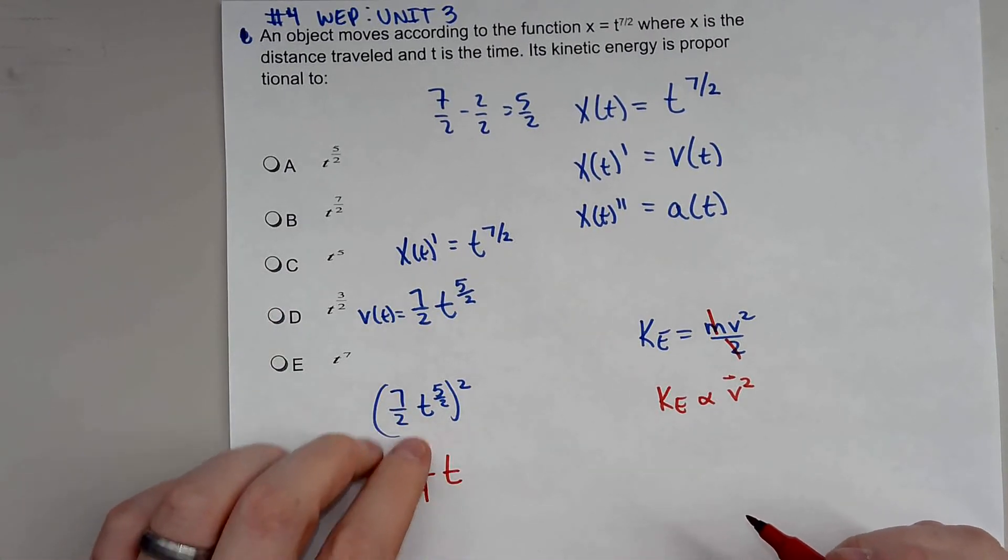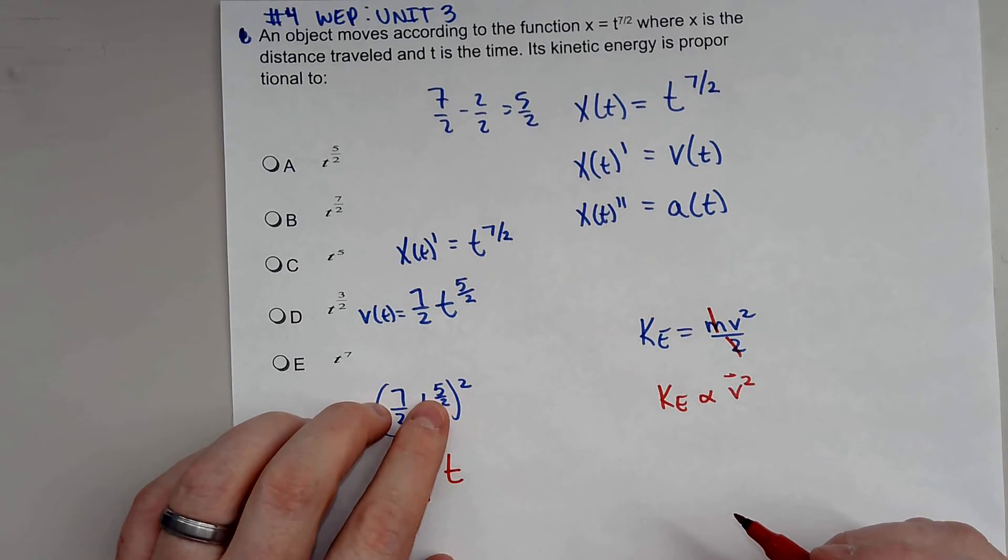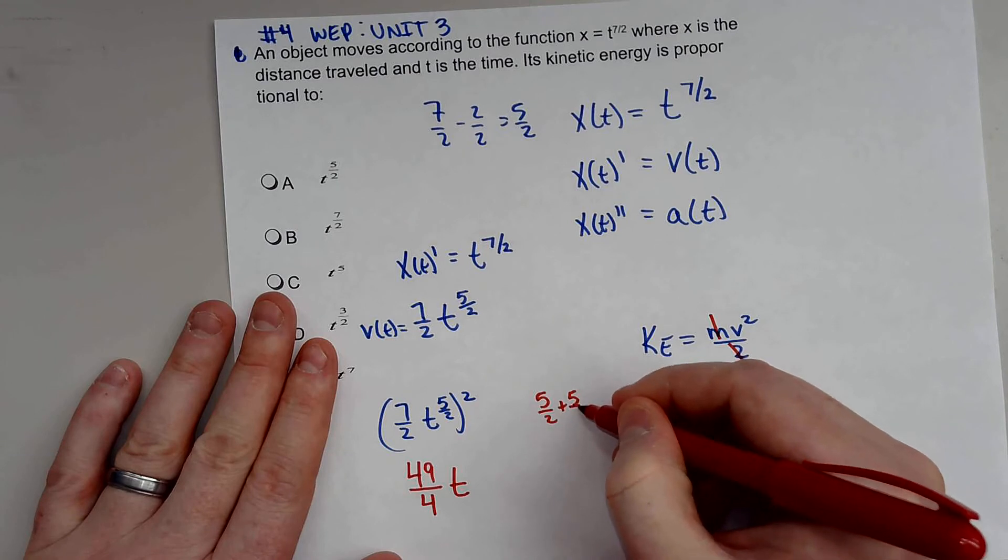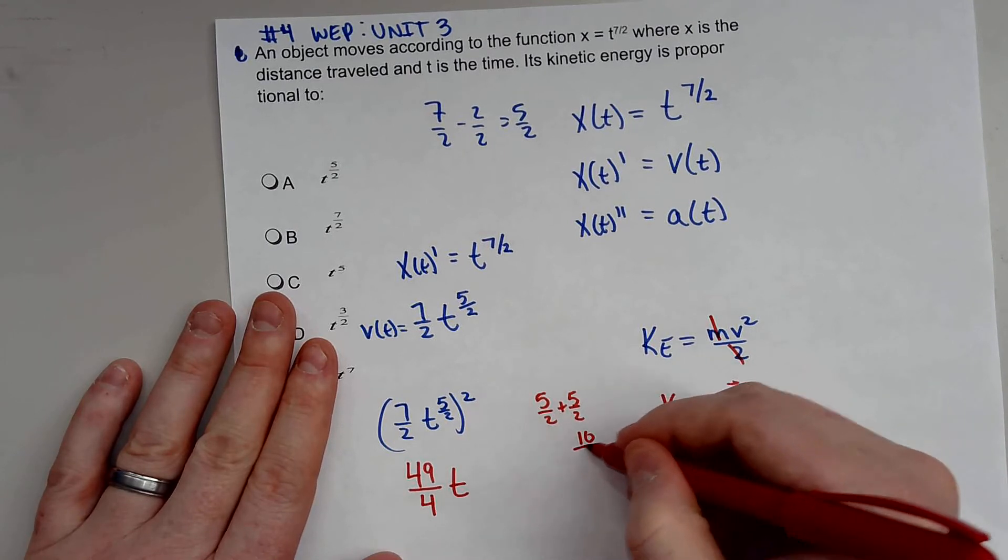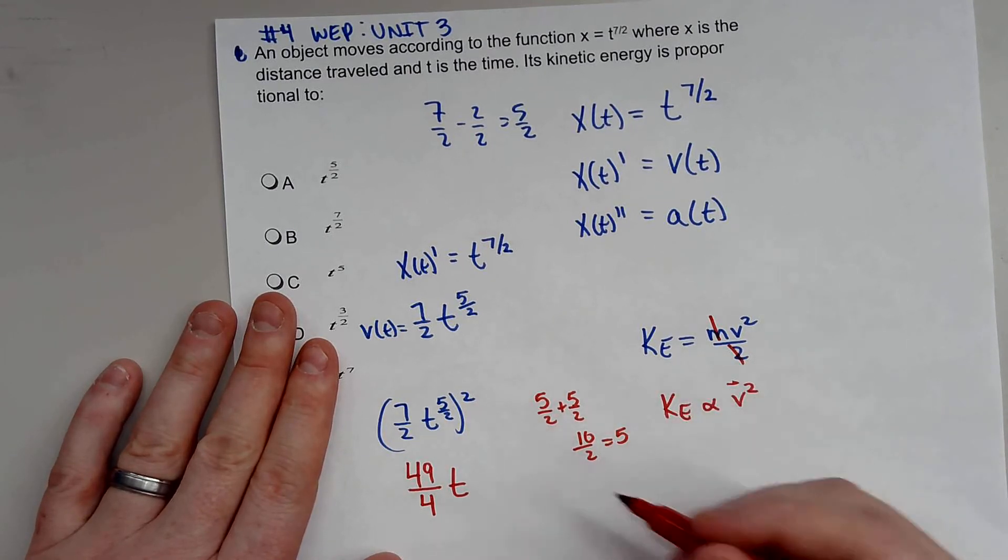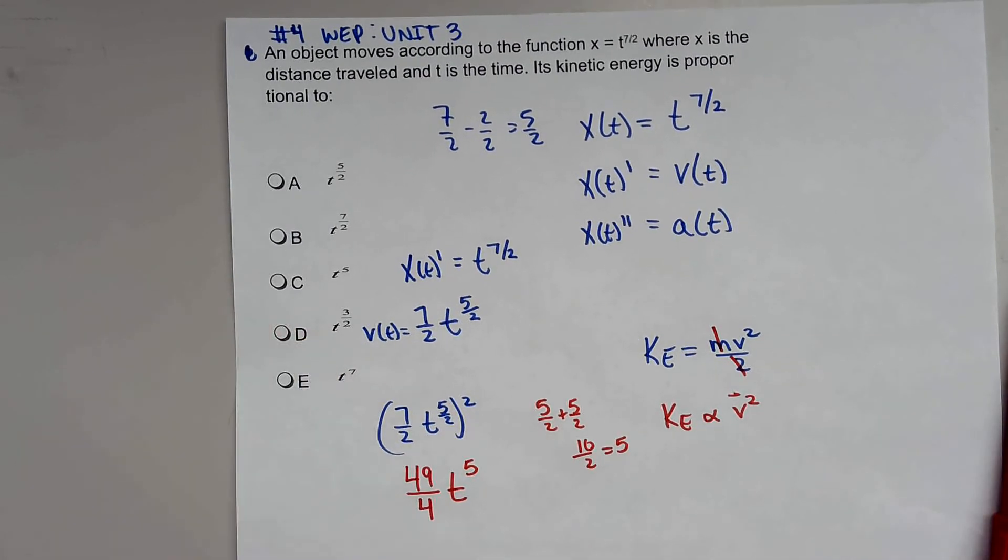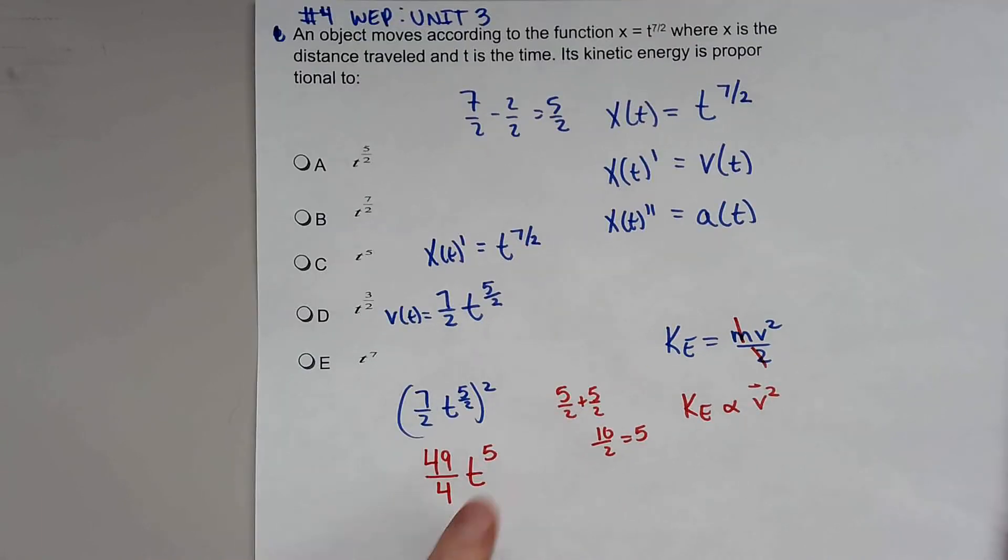Now, this is kind of a tricky part. Right here, kids think, oh, I square this too. Actually, you don't. With the exponents, you actually add them up. That gives you 10/2, which actually works out to 5. So this actually works out to (49/4)t^5.